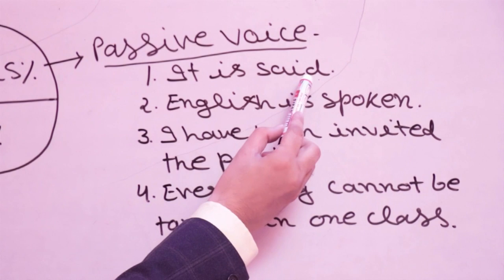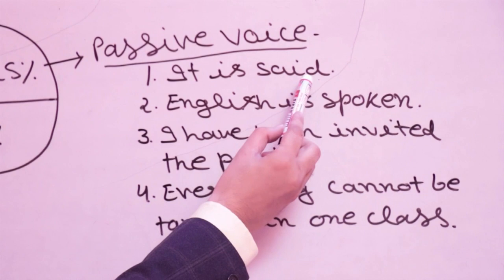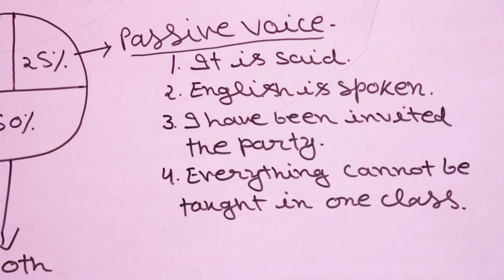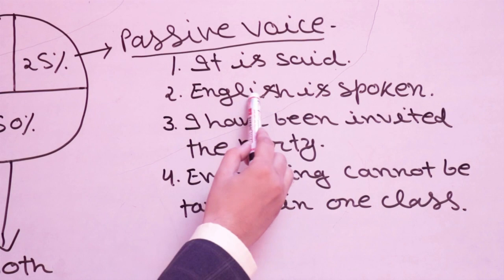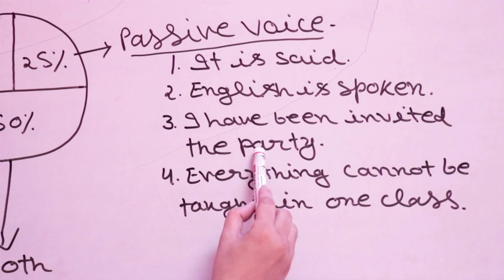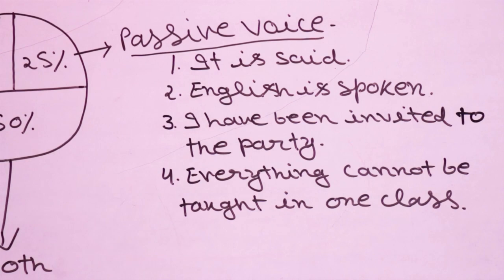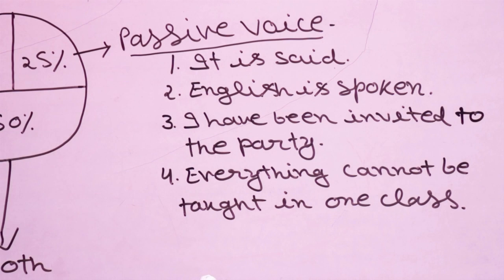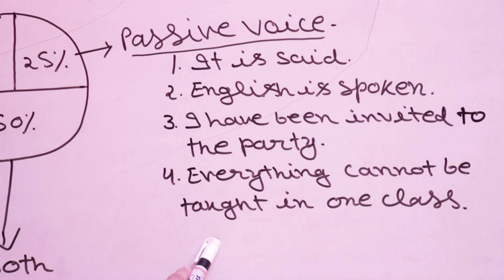And 25 percent of sentences exist only in passive voice. For example: 'It is said that honesty is the best policy.' 'English is spoken throughout the world.' 'I have been invited to the party.' 'Everything cannot be taught in one class.' These are naturally passive — do not try to force them into active. Passive voice and active voice are used to make language beautiful; don't make it ugly by forcing a change.